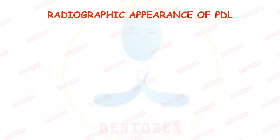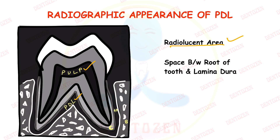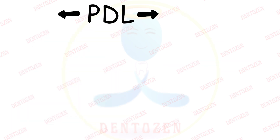Radiographic appearance of PDL: like pulp, PDL is also a soft tissue and appears as a radiolucent (dark) area on the radiograph. This is called the periodontal ligament space, present between the root of the tooth and the lamina dura — a white line representing the alveolar bone. The width of this PDL space may decrease (thinning) or increase (widening) in different diseases, allowing us to predict underlying conditions from radiographs.